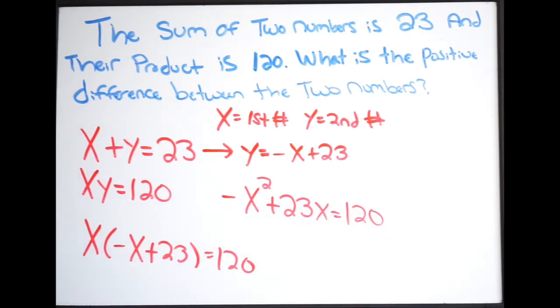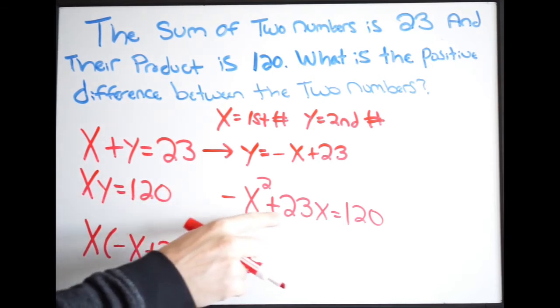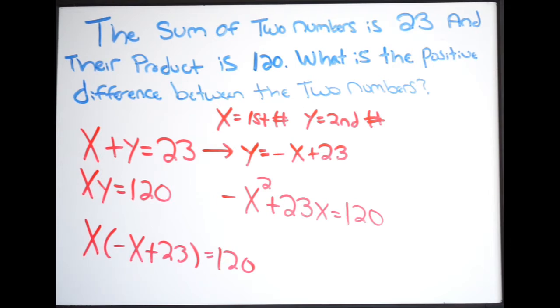So I can see here that I have a quadratic. And we know how to solve quadratics. We can factor, we can use the quadratic formula, we can even complete the square. So what I want to do is I want to set one side equal to zero so I can solve this quadratic. So I'm going to add x squared on both sides and I'm going to subtract 23x on both sides. Doing that you're going to get the following. You get x squared minus 23x plus 120. This will all be equal to zero.